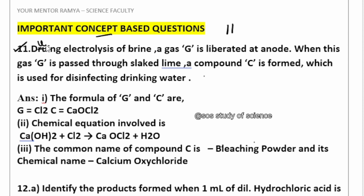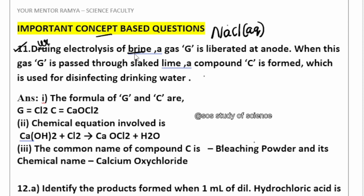The first question is about the electrolysis of brine. Whenever you see 'brine' in your question paper, always remember that brine is the aqueous solution of sodium chloride — when you take sodium chloride and add water, it becomes aqueous solution of sodium chloride. To this solution we are doing electrolysis, meaning we are passing electricity.